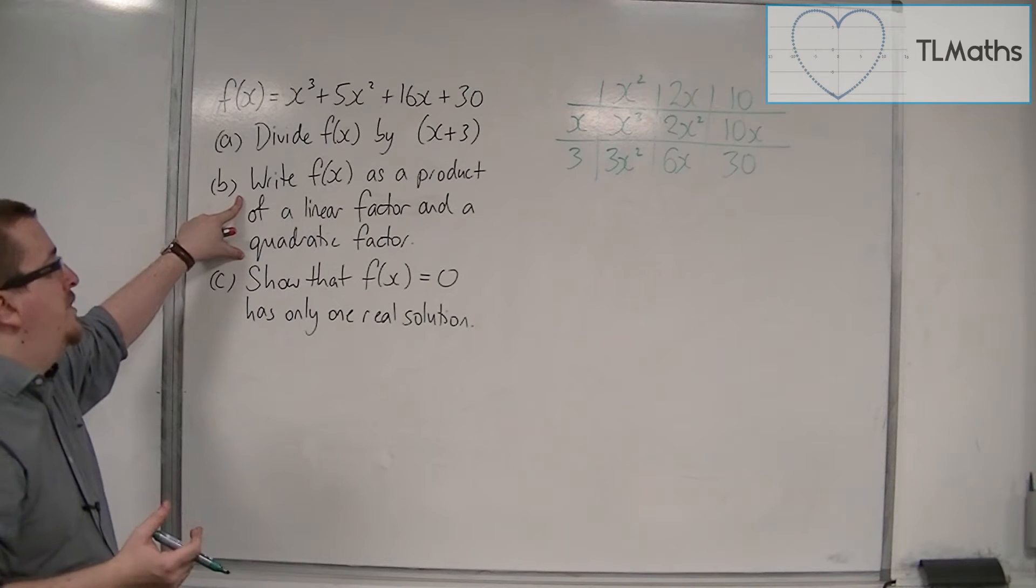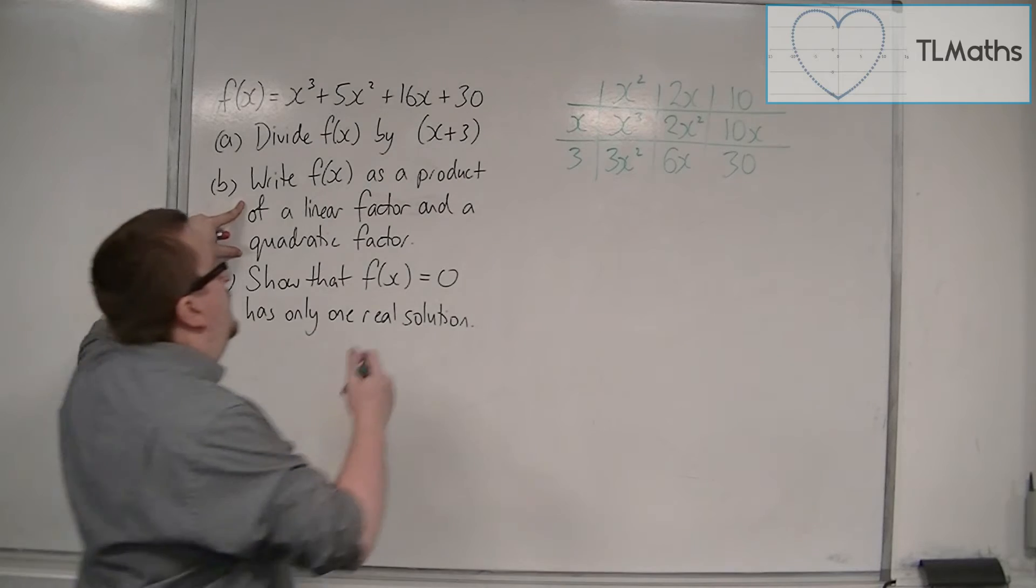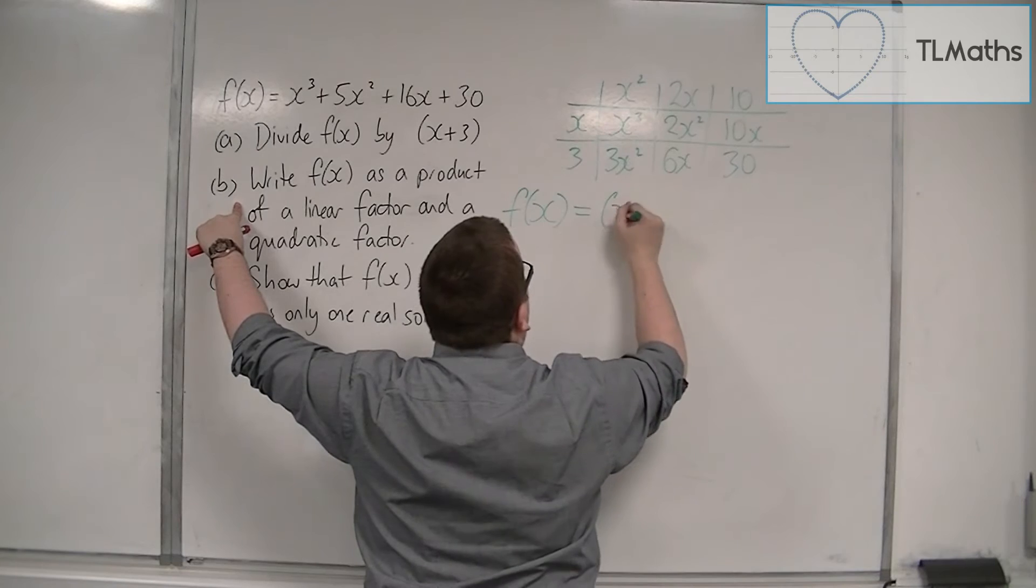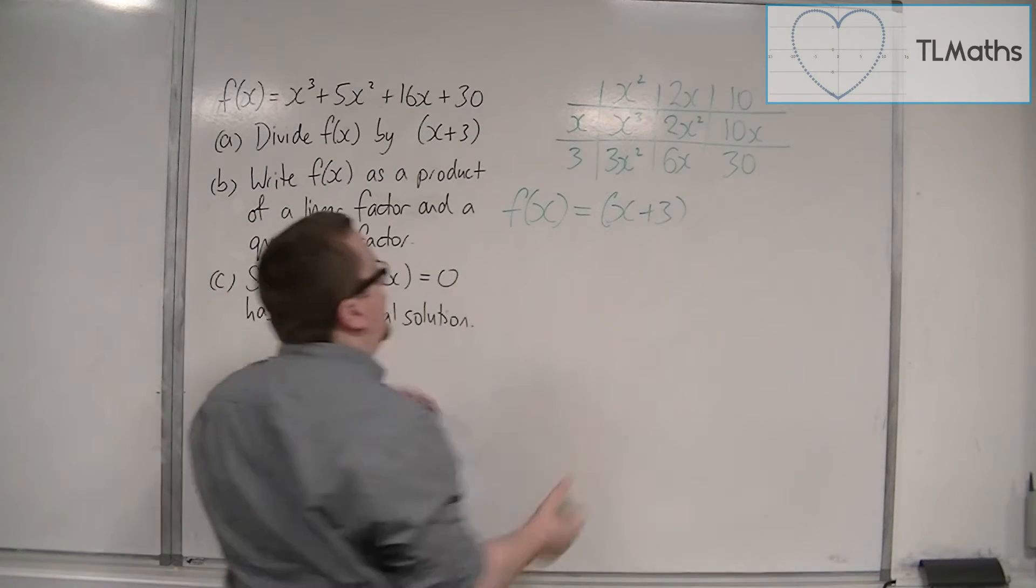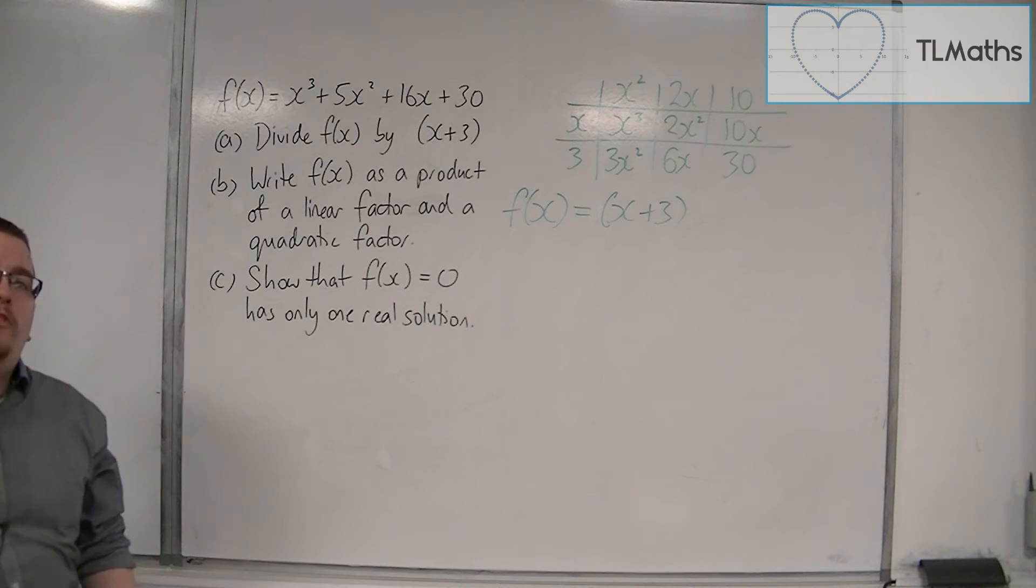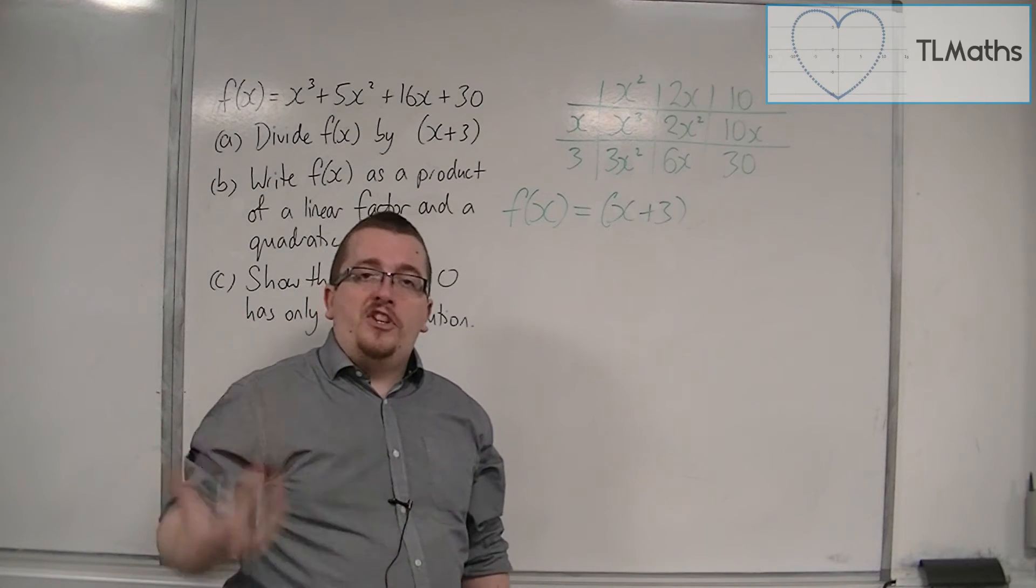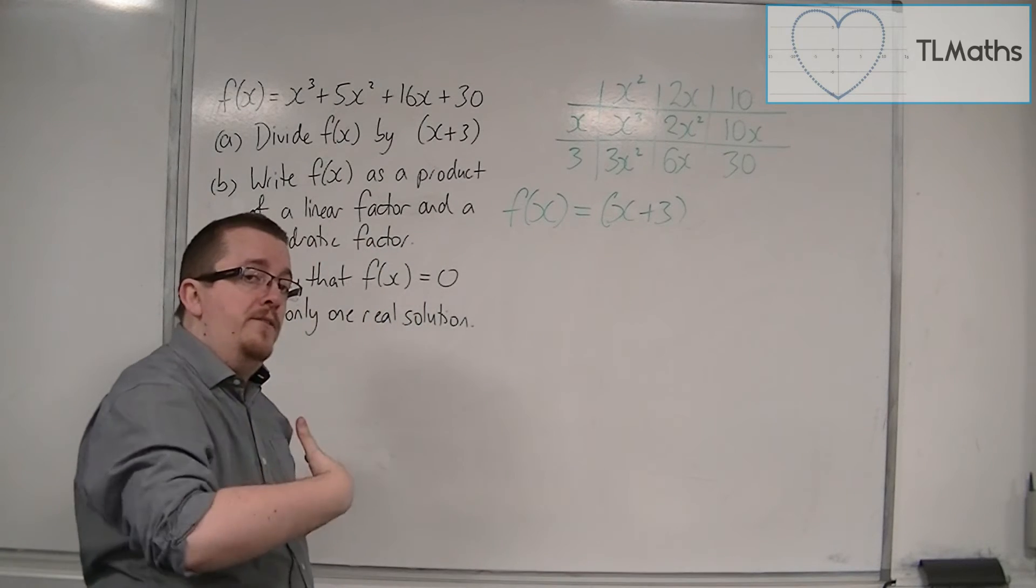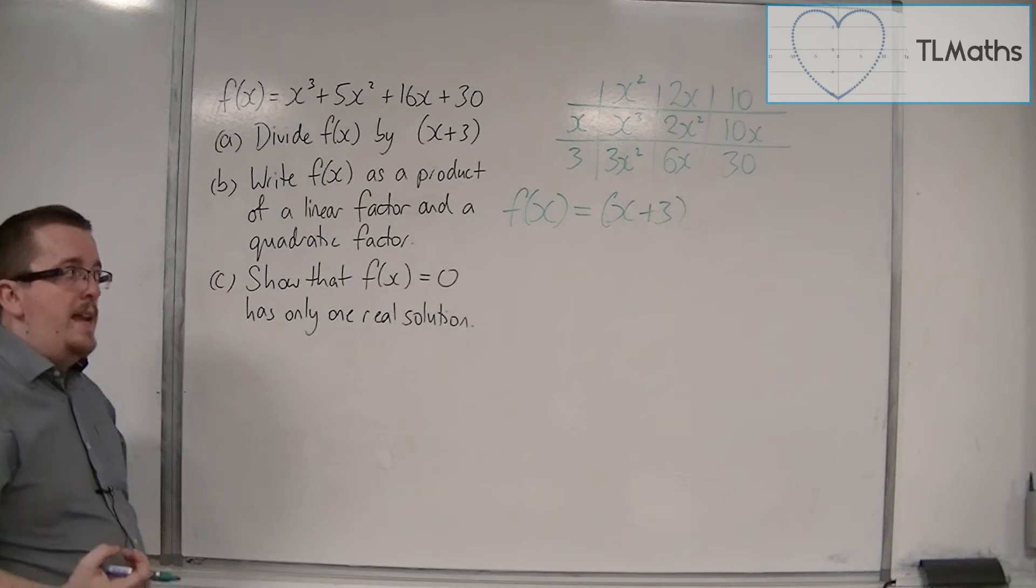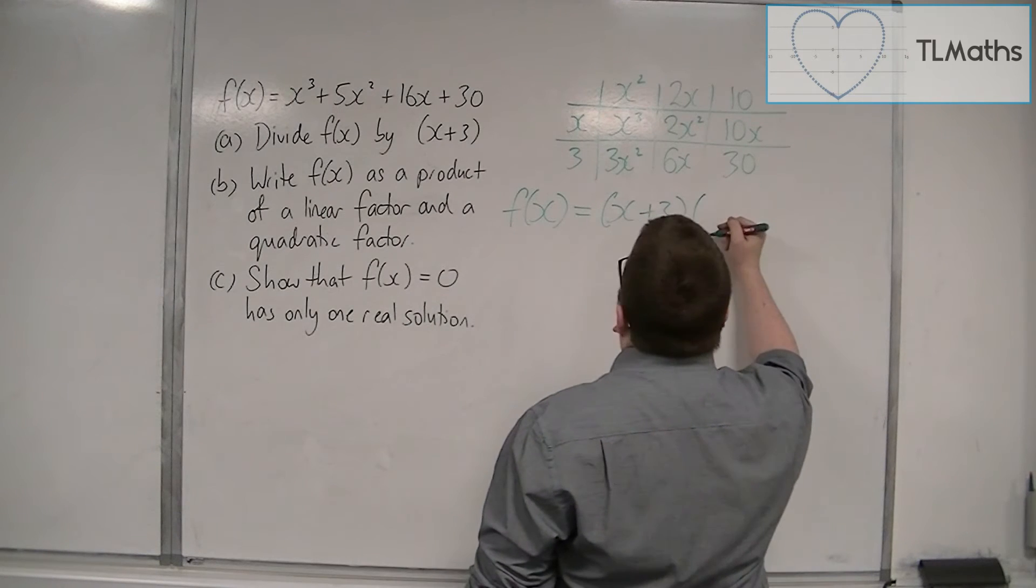Part B: write f(x) as a product of a linear factor and a quadratic factor. I can write f(x) as x+3 times something, because x+3 goes into the polynomial cleanly, so it must be a factor. It's like saying that 10 divided by 5 is 2. Because 5 goes into 10 cleanly, 5 is a factor of 10. So x+3 is a factor of f(x).